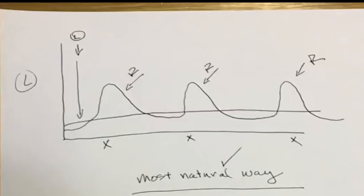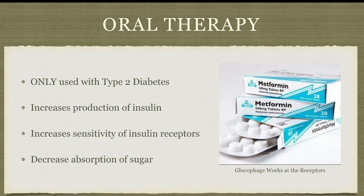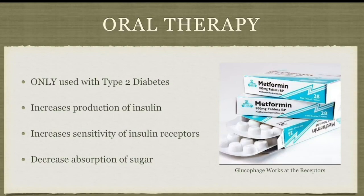While insulin can be used with all types of diabetes and is required for type 1 and generally gestational diabetes, for type 2 diabetics we can use oral medicines. Oral medicines hit the exact cause of type 2 diabetes in three ways: they cause the pancreas to produce more insulin to overcome insulin resistance; they work on insulin receptors to make them function better — a classic example being metformin or glucophage; and they decrease absorption of sugar by causing it to be excreted in the gut. For most of my type 2 diabetics I use combinations of the first two approaches.